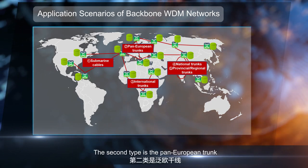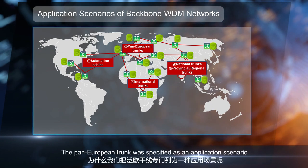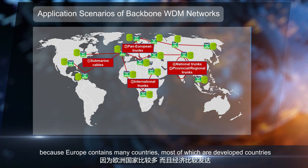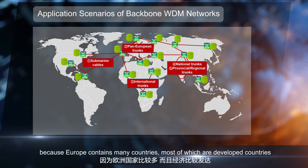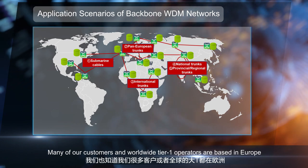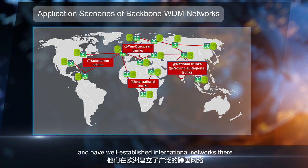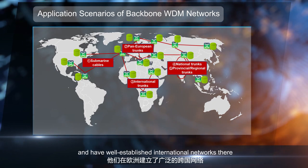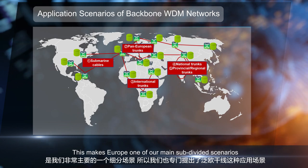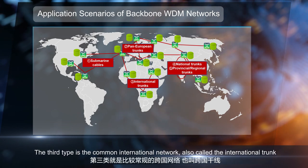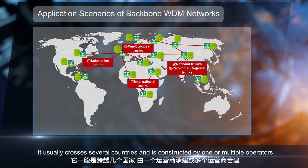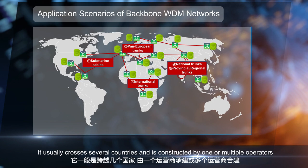The second type is the pan-European trunk. The pan-European trunk was specified as an application scenario because Europe contains many countries, most of which are developed countries. Many of our customers and worldwide Tier 1 operators are based in Europe and have well-established international networks there, making Europe one of our main subdivided scenarios. The third type is the common international network, also called the international trunk. It usually crosses several countries and is constructed by one or multiple operators.